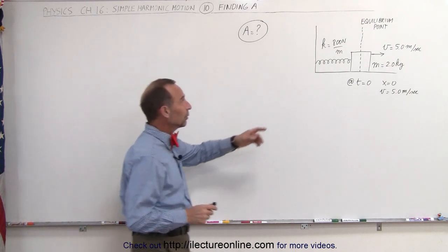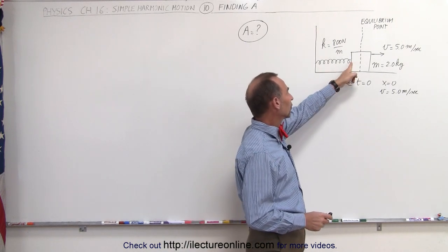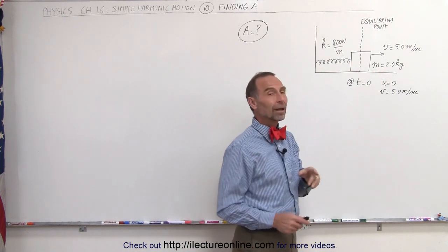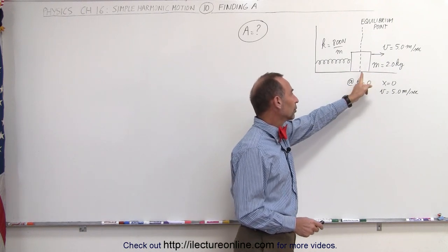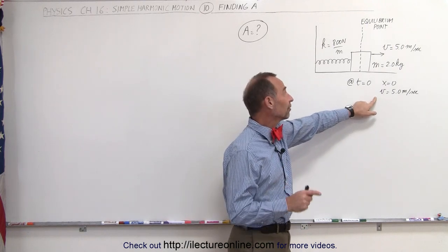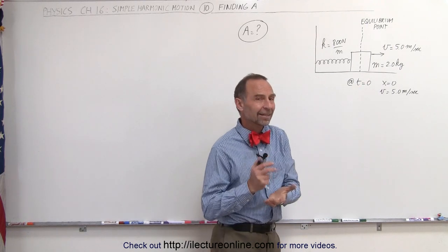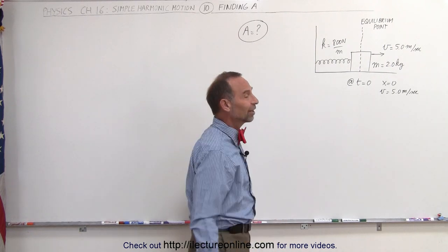We're given that there's a spring with a spring constant of 800 newtons per meter, a mass attached to the spring with a mass of 2 kilograms. At t equal to zero, the position of the block is equal to x equals zero, and it has a positive 5 meters per second velocity at that very moment. And they're trying to find the amplitude of the oscillation.